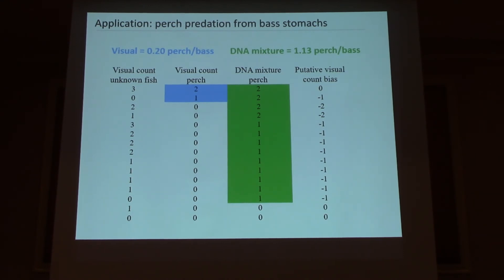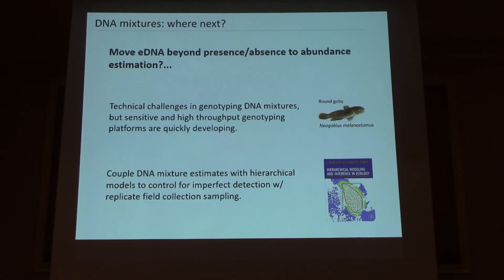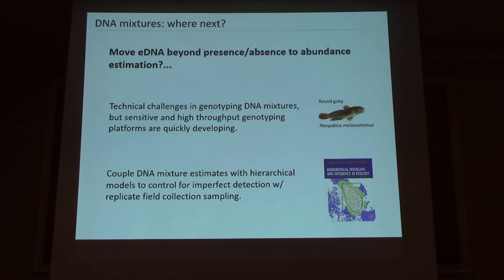We're now trying to get a large project going to look at threatened Chinook salmon — juvenile Chinook salmon predation on the Sacramento River. Stay tuned in four years if we actually get funded. There are going to be technical challenges with DNA mixtures because it's not trivial to get genotypes from nuclear DNA in a mixture, but we're getting better and better. The technology is moving very quickly, so I don't think that's going to be a permanent obstacle in many applications.